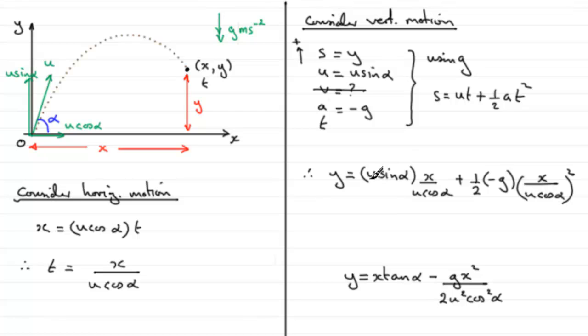So what have we got? Well you can see that the U's cancel out here, and sine alpha over cos alpha, well that's tan alpha. So we've got X tan alpha. And when it comes to this term, you can see we've got minus G x squared over 2 and on the bottom here we've got U squared cos squared alpha. So we therefore get this result that Y equals X tan alpha minus G x squared all over 2 U squared cos squared alpha.